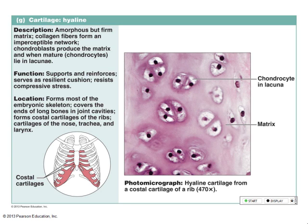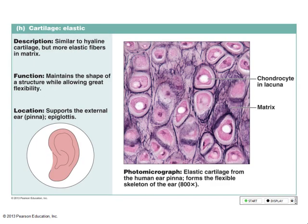We find a lot of hyaline cartilage in synovial joints. The next type is elastic cartilage — there go my ears. It's cartilage, so the matrix is starting to get harder, and it has a lot of elastic fibers — all that black stuff that looks like hair. What are those big holes? Lacunae. And what's inside the lacunae? Cells.